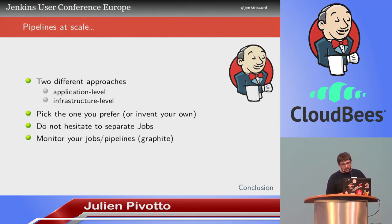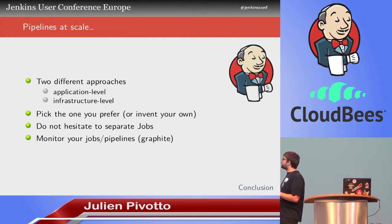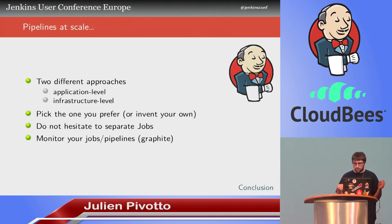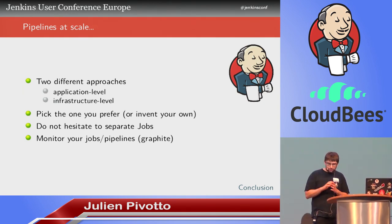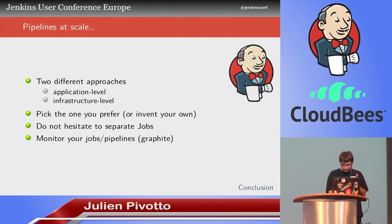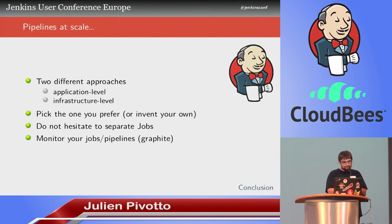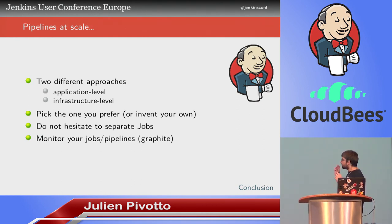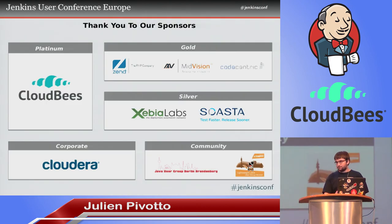So, pipelines at scale: I've presented two different approaches — one at the application level using plugins, and the other at the infrastructure level using Puppet. You can pick the one you prefer, or invent your own. You don't need to hesitate about the separation of jobs — separating jobs is fine, and doing a clear separation is good. You will need to monitor your jobs and your pipelines because they are part of your infrastructure. You need to monitor your Jenkins server, know how many jobs are running, how many jobs are queued — the same for your slaves. Thank you, and if you have any questions.